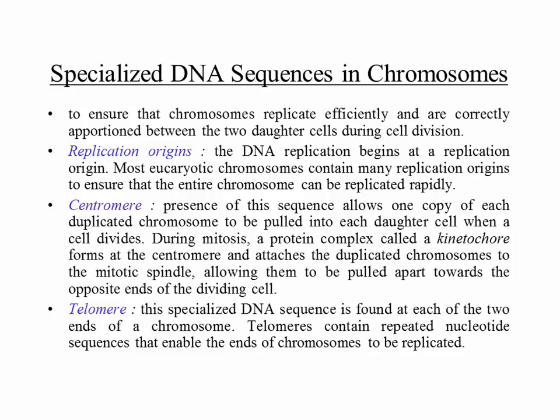The centromere sequence allows one copy of each duplicated chromosome to be pulled into each daughter cell when a cell divides. During mitosis, a protein complex called a kinetochore forms at the centromere and attaches the duplicated chromosomes to the mitotic spindle — the machinery that actually separates out the two replicated chromosomes, allowing them to be pulled apart towards opposite ends of the dividing cell.